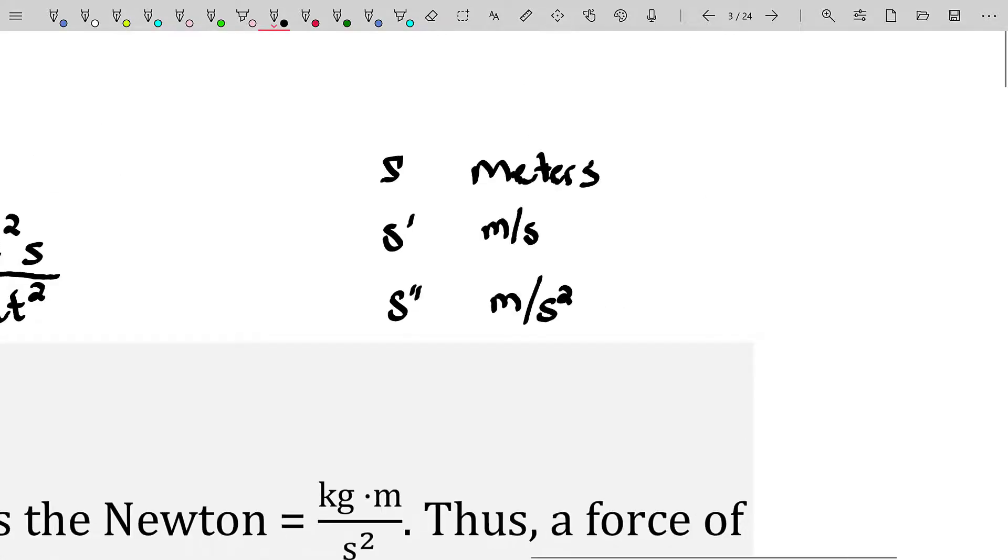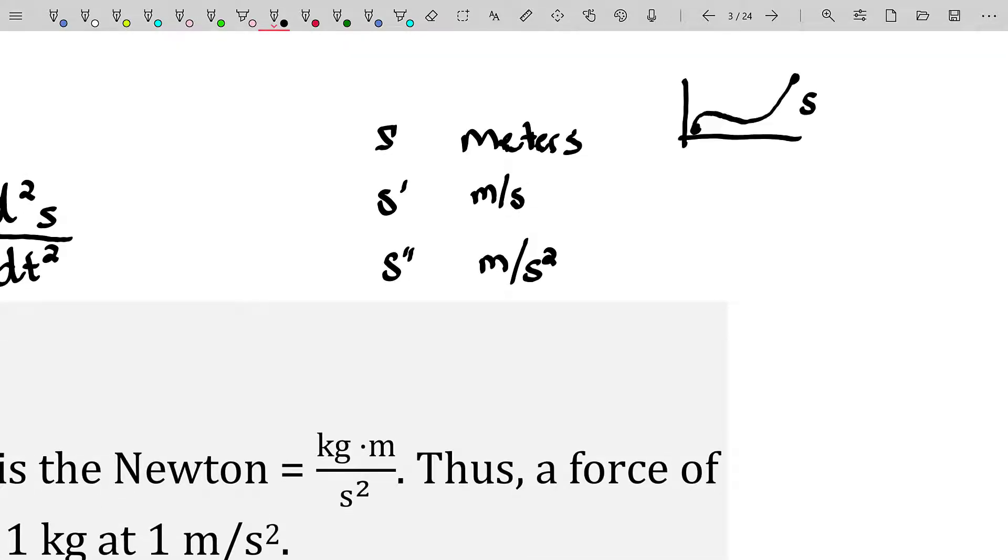Because if you think about derivatives, if that's our position function, the derivative is rise over run, essentially. I mean, obviously it's instantaneous rise over run, but the rise unit here is in meters. The run unit is in seconds. And so rise over run is, well, meters per second.